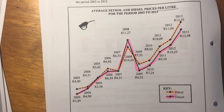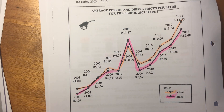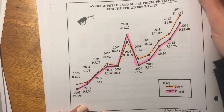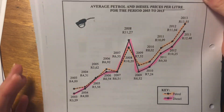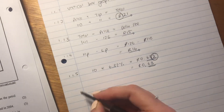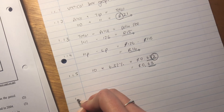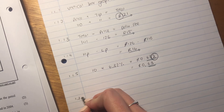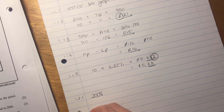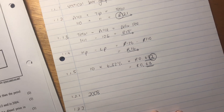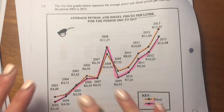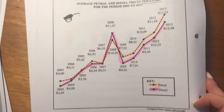So it's basically asking: where is the pink higher than the orange? We can see that is in 2008. This is literally just interpretation. The answer is 2008. You must be able to understand and interpret graphs.